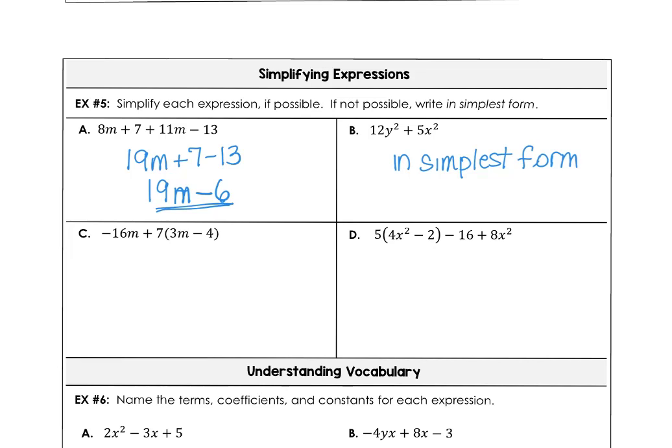In part C, it looks like we need to use distributive property. 7 times 3m is 21m, and 7 times negative 4 is negative 28. Combining 21m and negative 16m is 5m, so we end up with 5m minus 28.